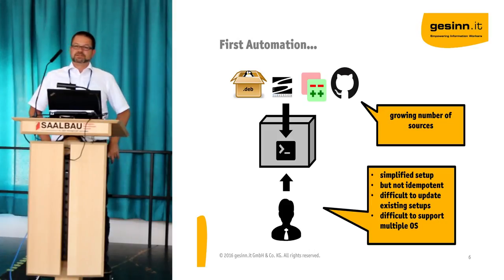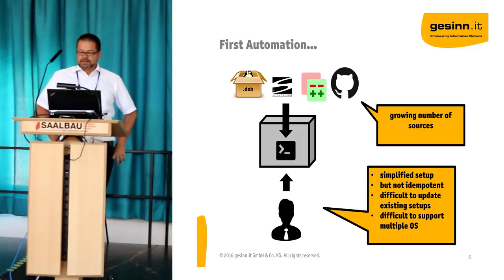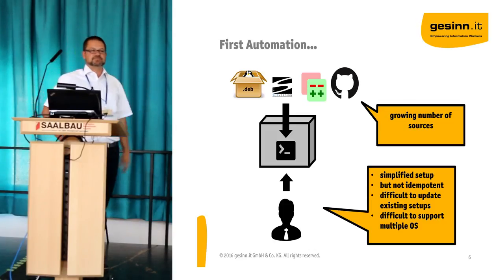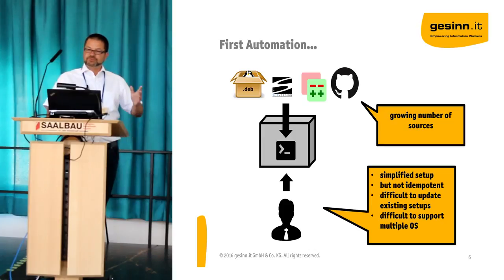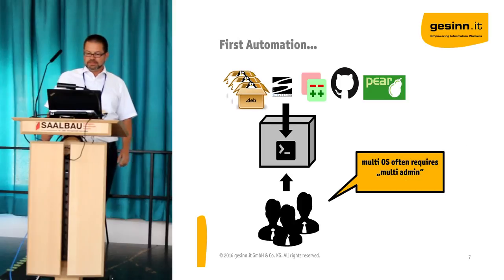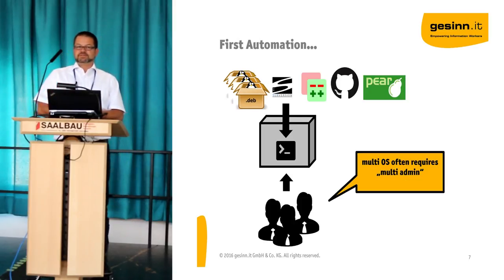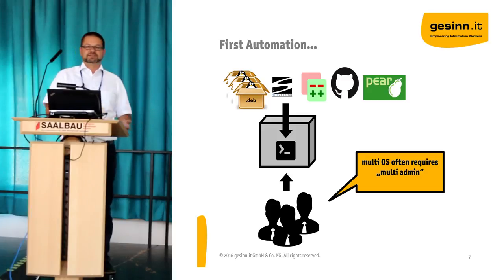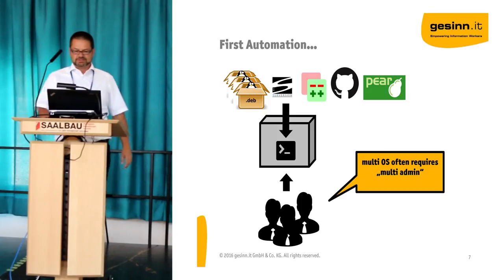They were also not very good at updating existing setups — this was really good for the initial setup and then you're done. It was difficult to support multiple operating systems. For example, finding which OS version you're on required reading different magic text files for every operating system. But it was the first automation and helped already a lot. Then when it comes to multiple operating systems, if you are the expert in Ubuntu but not in SUSE Enterprise, you are lost. You need to ask a colleague who may not be aware of MediaWiki. So you have a multi-admin phenomenon, and this does not scale very well.